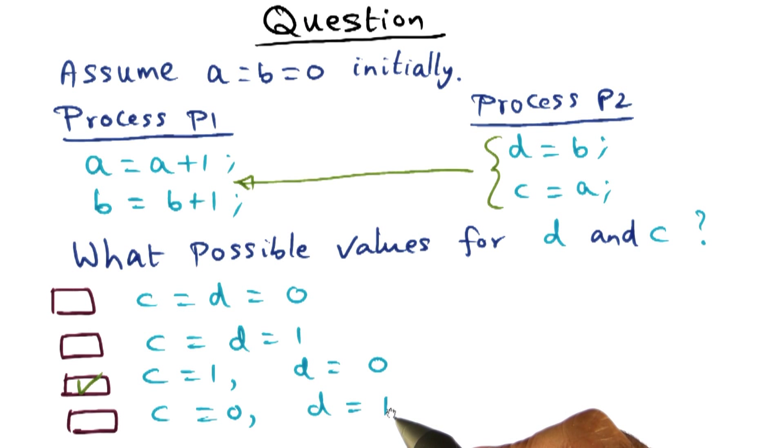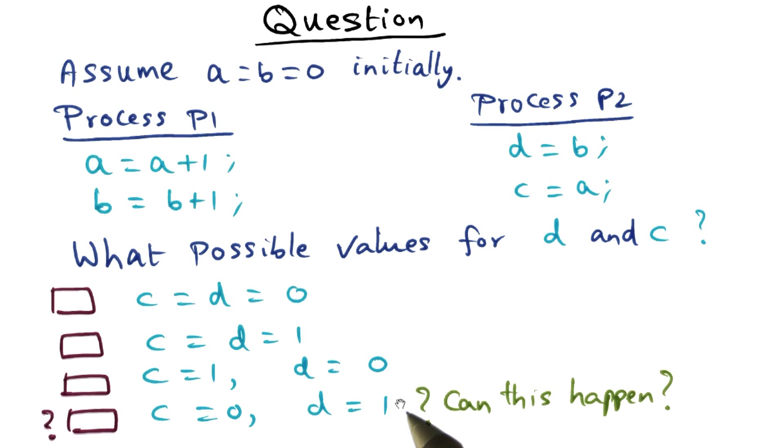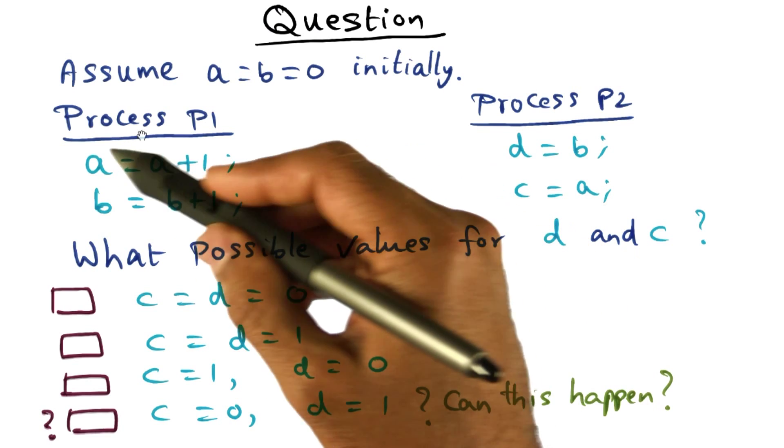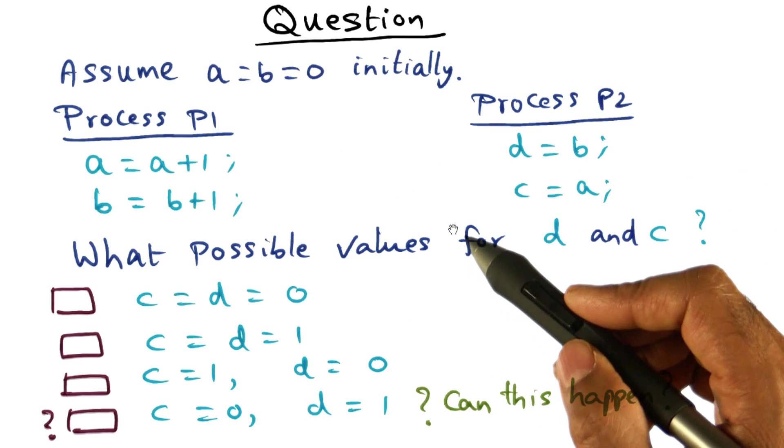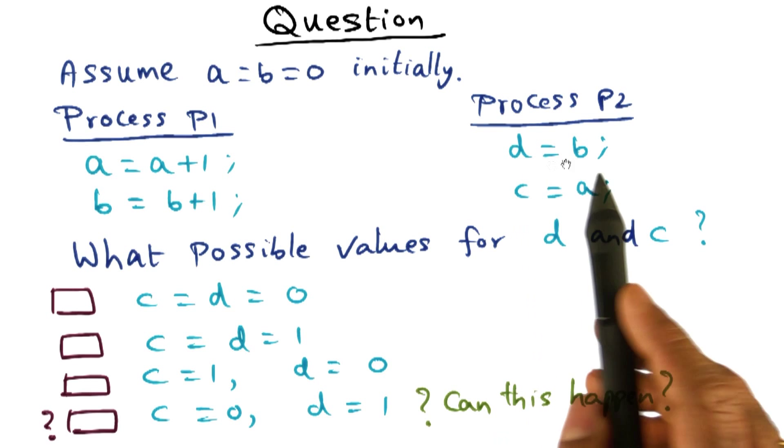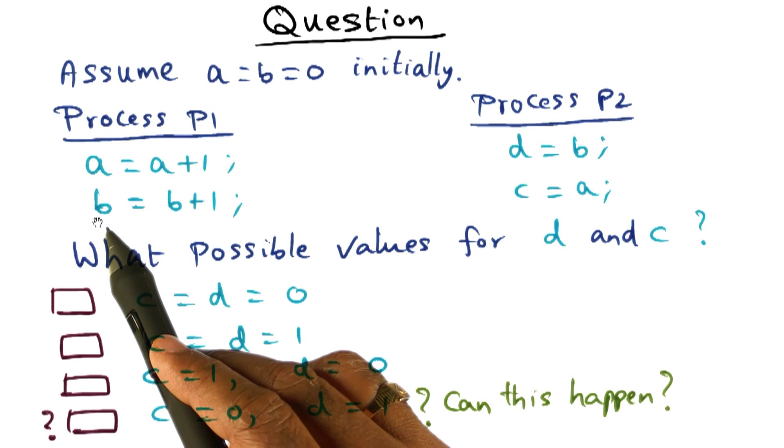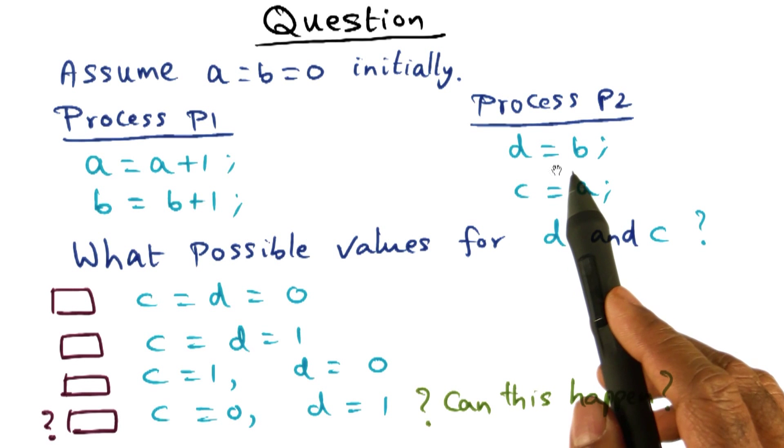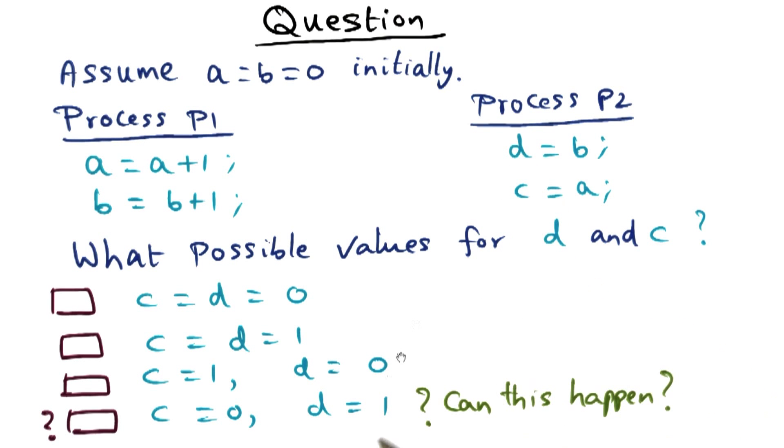Now let's look at this last choice that I have. C gets 0 and D gets 1. Can this happen? C getting a 0 and D getting a 1? And the reason I ask you this question is because if you look at this piece of code and this piece of code here, if D were to get 1, what that means is that this assignment of B gets B plus 1 is already happening. That's what happened on P1. That's how the new value of B has gotten into D.